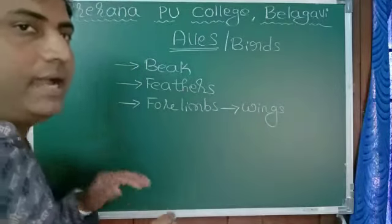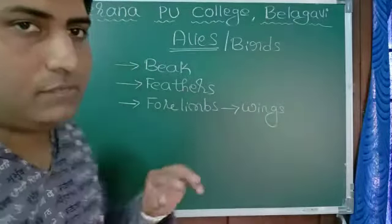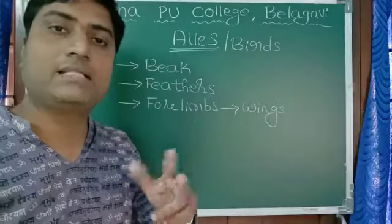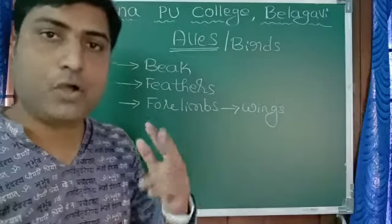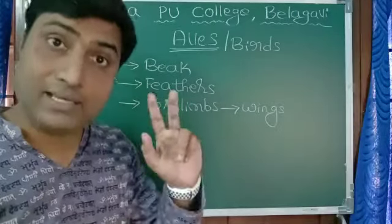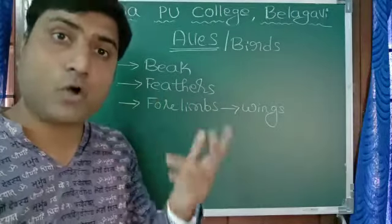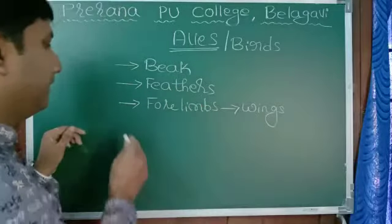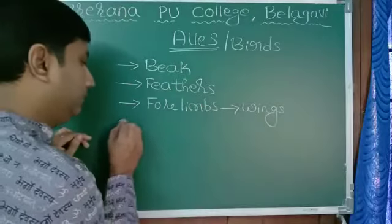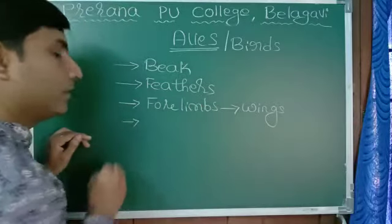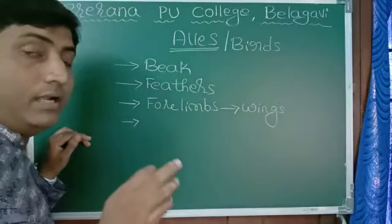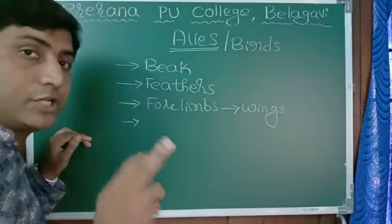The hind limbs, which we call legs, are used as per their habitat. Some use them for swimming, some for walking as in the case of the peacock, and some for running as in the case of the ostrich.